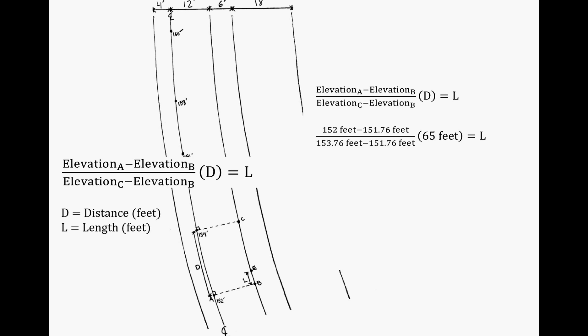For the next point on the denominator, we're looking for the elevation of C. We find it the same way we found B. Going up to 154 as our next interval, C will be 0.24 feet lower than 154 feet—again, 12 feet multiplied by our 2% cross slope. So we have 153.76 feet, then subtract the elevation of B, which we found earlier: 151.76 feet.